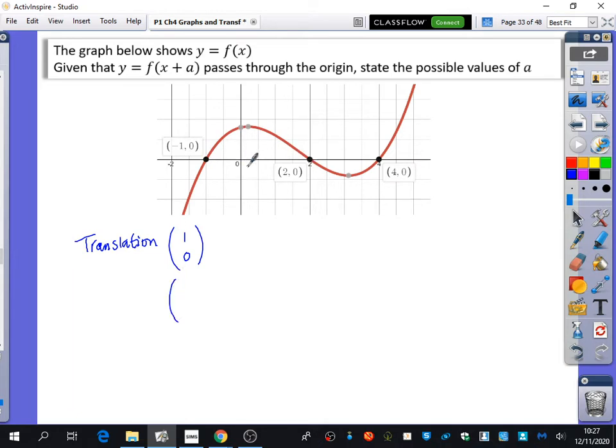Another way it could move would be minus 2, 0. Or it could be minus 4, 0. Because if it moved 4 spaces to the left, that point would be going through the origin. If it was minus 2, 0, that would move 2 spaces to the left. If it moved 1 space to the right, then it would be going through the origin.